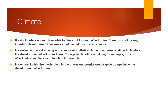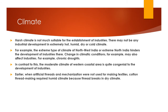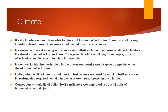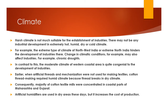In contrast, if the climate is pleasant and moderate, the development of industry is encouraged. Industries like textile and cotton thread-making require humid climate; a dry climate is not suitable for cotton or thread production. The majority of cotton textile mills are concentrated in the coastal parts of Maharashtra and Gujarat. Artificial humidifiers are used in dry areas today, but this increases the cost of production.